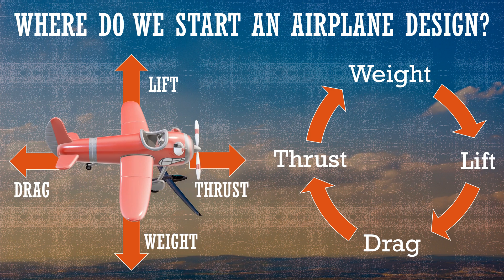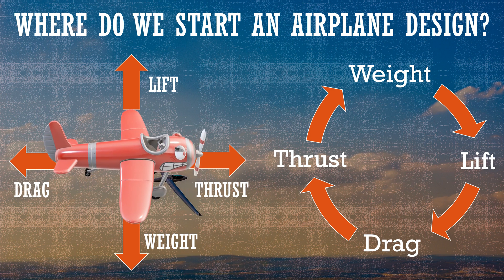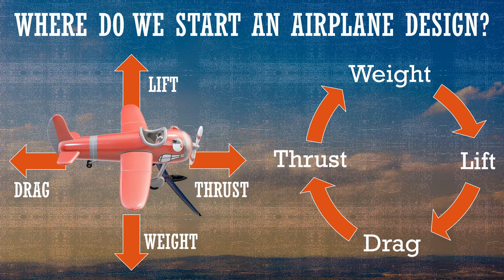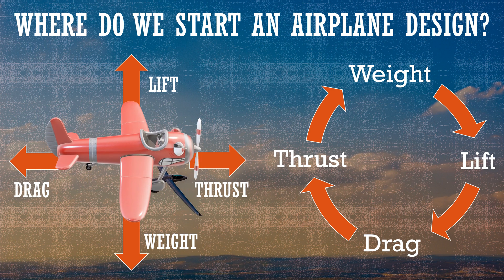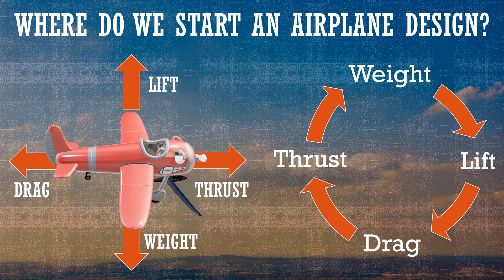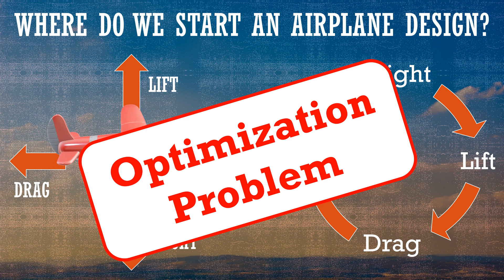Now this brings up two points. The first: where do we start an airplane design? In order to know how much lift we need to produce, we need to know how much weight. But to figure out how much the wing is going to weigh, we need to understand how much lift we need to provide so we can design an adequately sized wing — so do we start with lift or with weight? The second point is that this is not a simple analytical problem where we start with a few knowns, plug them into equations, and find the answer. Rather, aircraft design is more of an optimization problem where you're trying to find the right balance of parameters and trade-offs to get the best solution out of the many possible solutions.